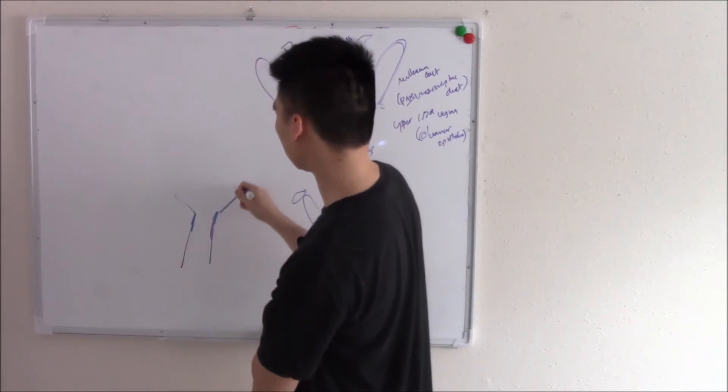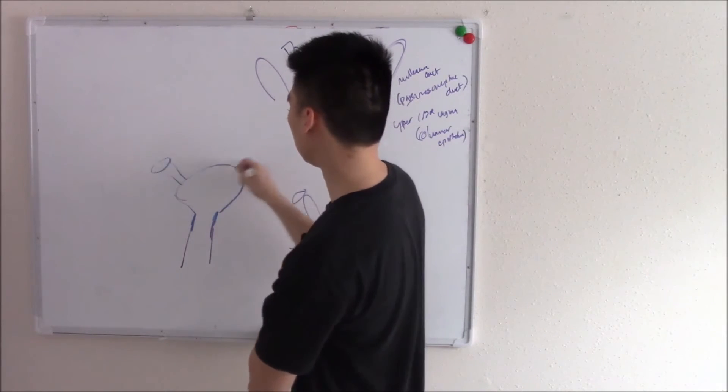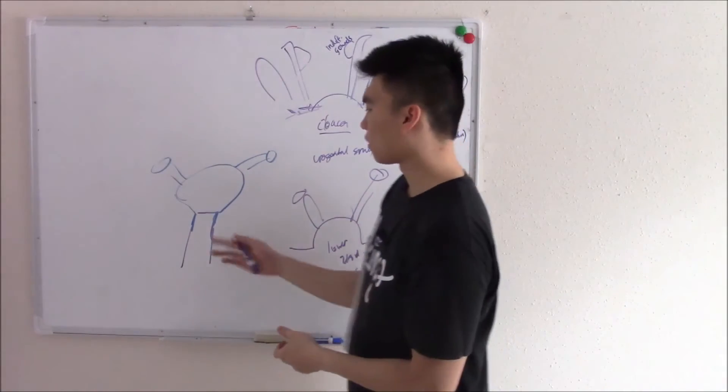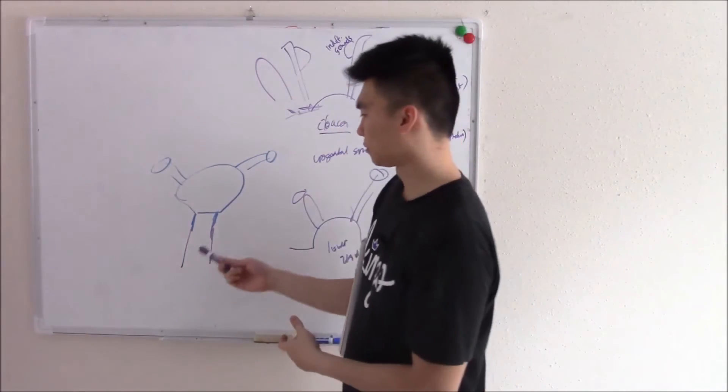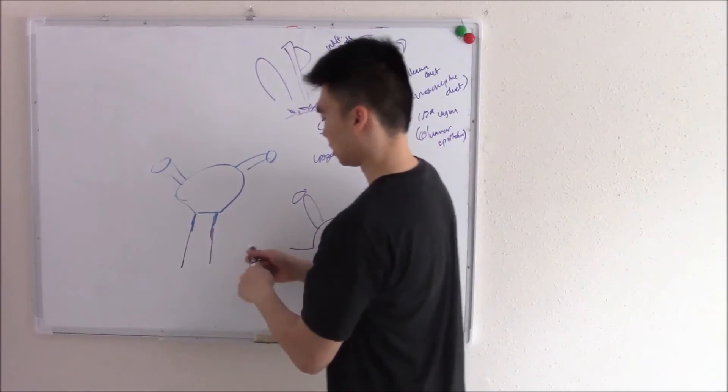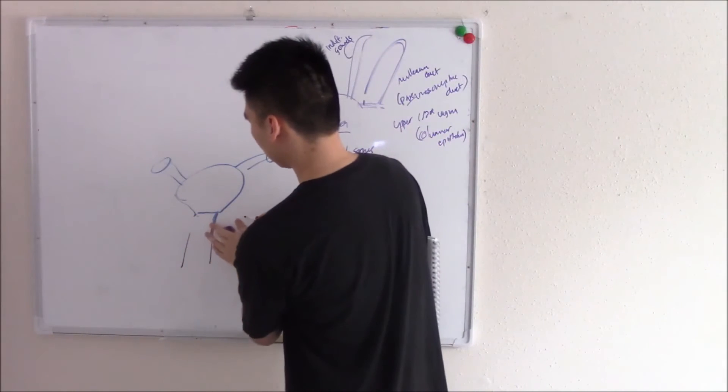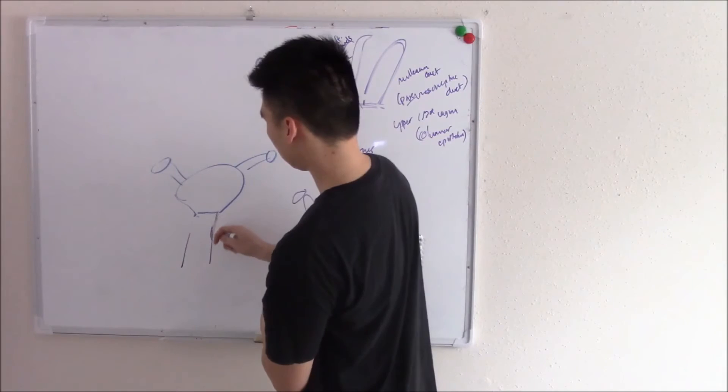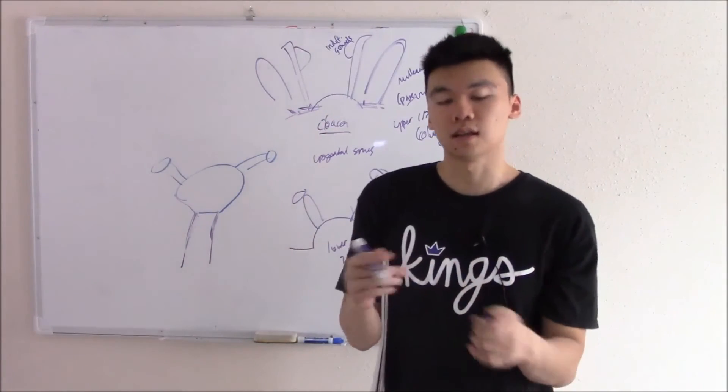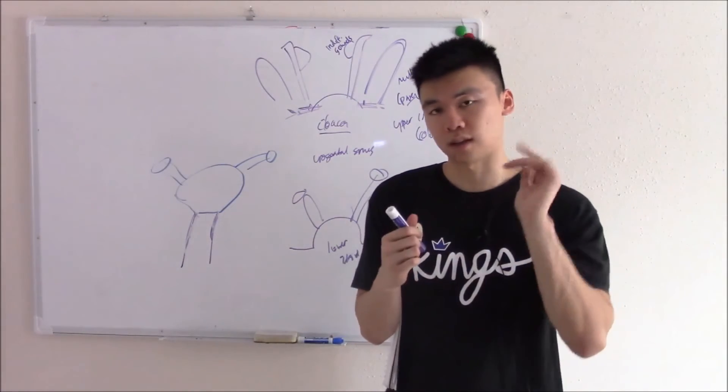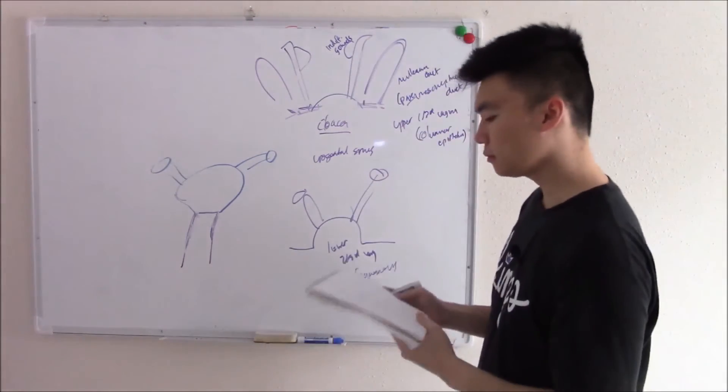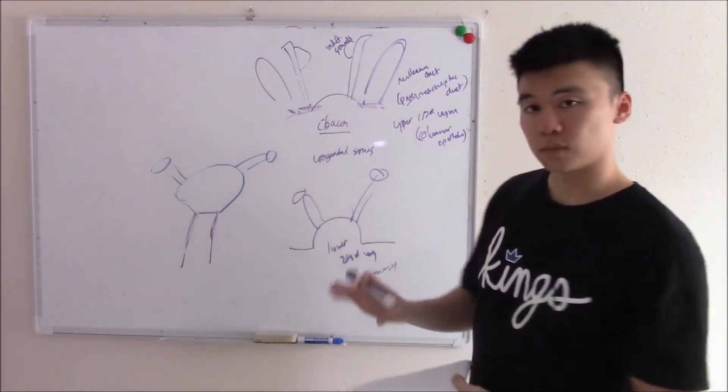So you'll have your lower two-thirds vagina made out of squamous, and your upper one-third from your paramesonephric duct made out of columnar. And your paramesonephric duct eventually becomes your uterus and the rest of your genital tract. However, we know that in newborns, that columnar eventually becomes replaced by squamous. That is what normally happens. So the squamous will replace that columnar and now your vagina is completely squamous epithelium. What type of squamous? Non-keratinized stratified squamous epithelium.